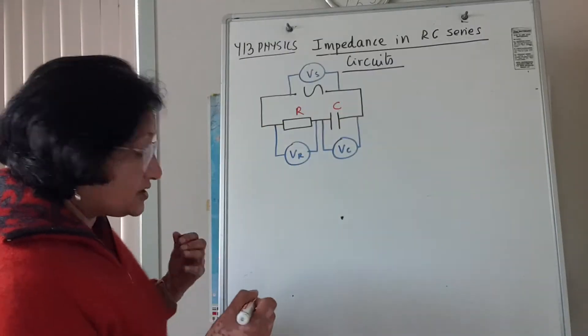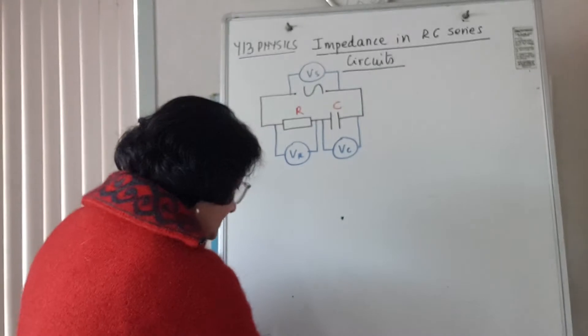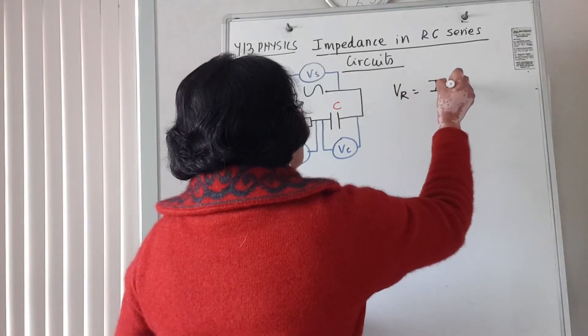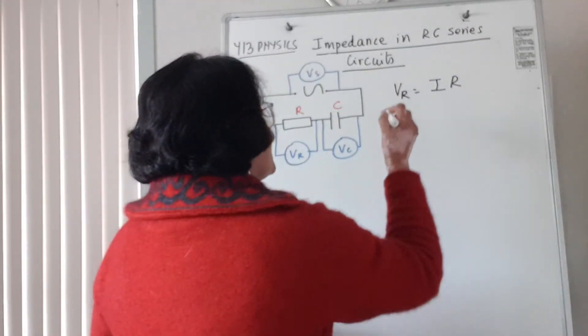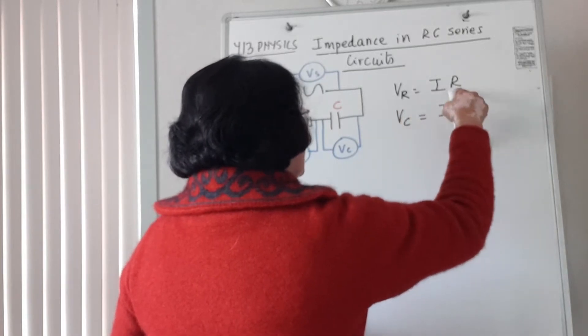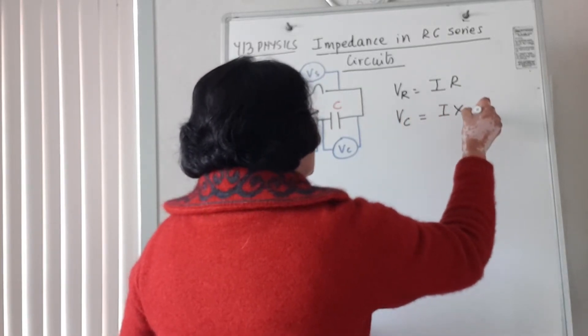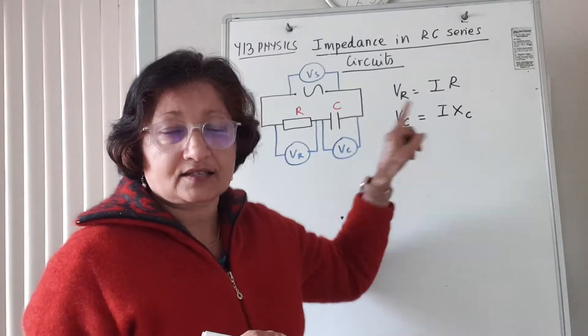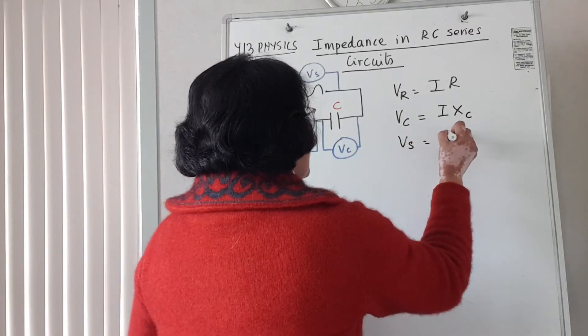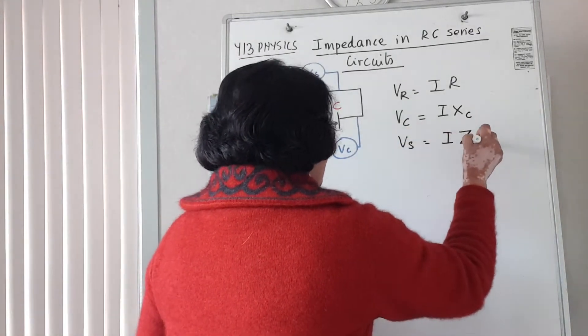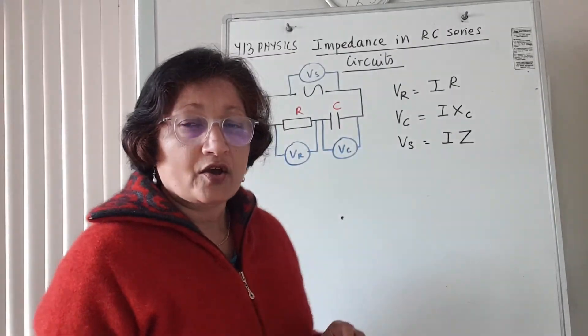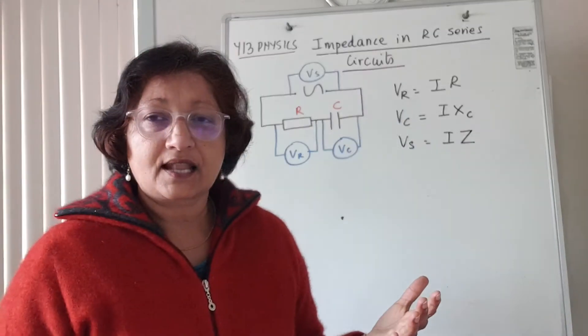Using Ohm's law, the voltage across the resistor is I times R, where I is the circuit current. The voltage across the capacitor is I times XC, where X is the reactance of the capacitor. The voltage across the supply is I times Z, which is the combined effect of resistance and reactance, called impedance.